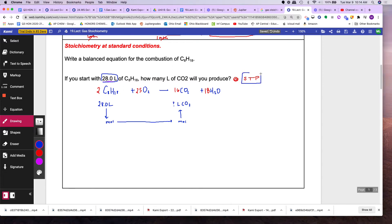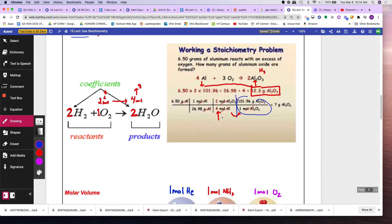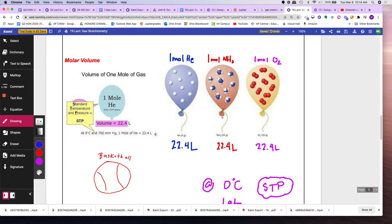STP means standard temperature, which is 0 degrees Celsius, and 1 atm of pressure. If you're at these conditions, your gas will occupy 22.4 liters.